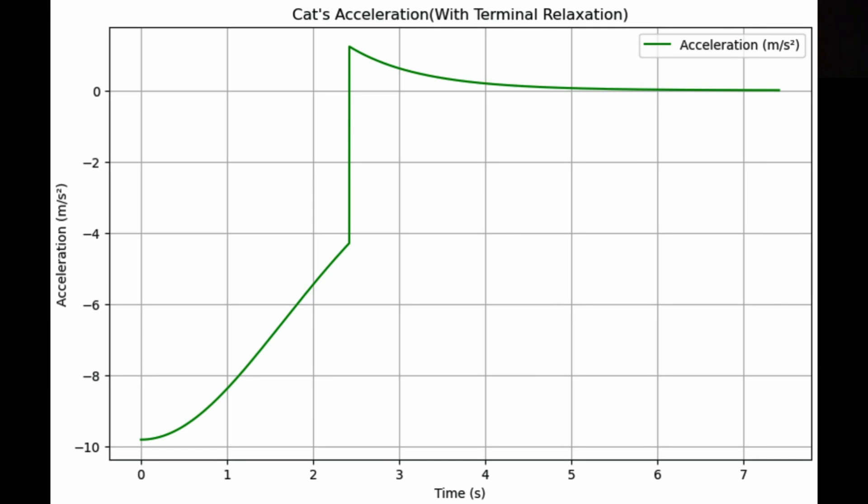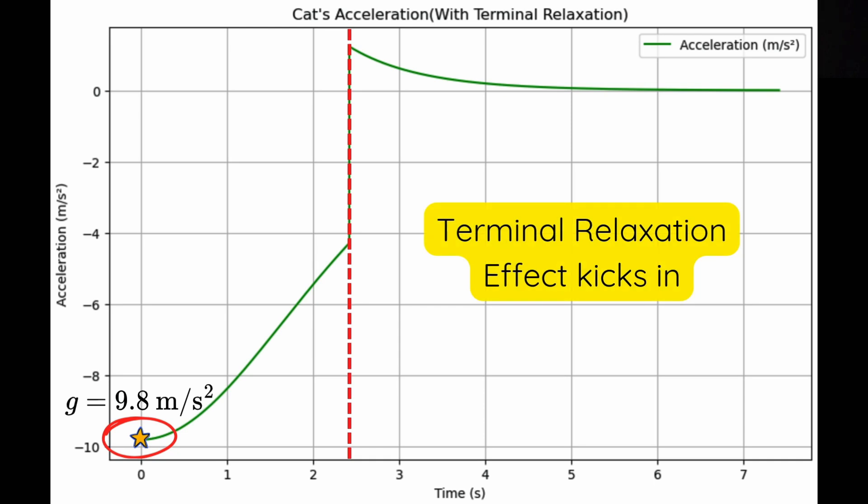The key all lies in the acceleration in the direction felt by the cat. At the very start, the cat's acceleration is nearly -9.8 meters per second squared, thanks to gravity pointing downwards. But as drag force builds up, this acceleration begins to taper off. The real magic happens around two and a half seconds into the fall, when the terminal relaxation effect kicks in. Suddenly, the cat's acceleration drops sharply, even turning positive for a brief moment. That's right—the cat is effectively slowing itself down, almost like hitting an invisible airbrake.